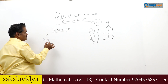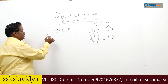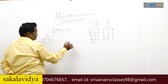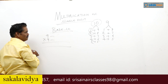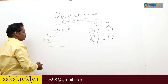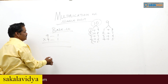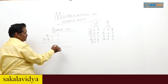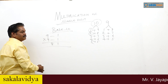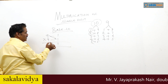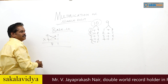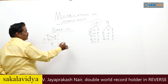9 into 9: from 9, 10 minus 9 is 1; again 10 minus 9 is 1. So 1 into 1 is 1. And 9 minus 1 is 8. So 9 into 9 is 81.